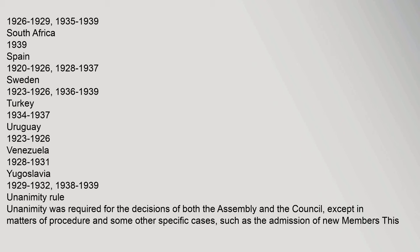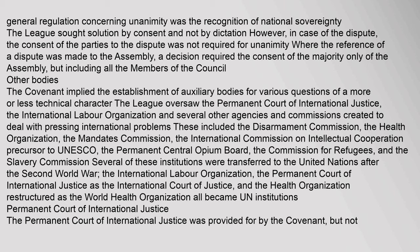Unanimity was required for the decisions of both the Assembly and the Council, except in matters of procedure and some other specific cases, such as the admission of new members. This general regulation concerning unanimity was the recognition of national sovereignty — the League sought solution by consent and not by dictation. However, in case of dispute, the consent of the parties to the dispute was not required for unanimity. Where the reference of a dispute was made to the Assembly, a decision required the consent of the majority only of the Assembly, but including all the members of the Council.